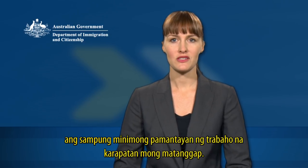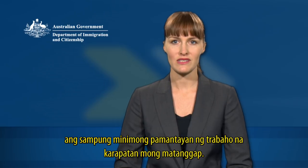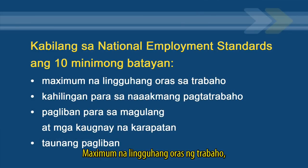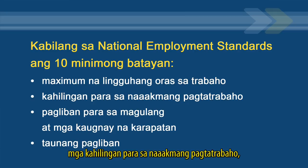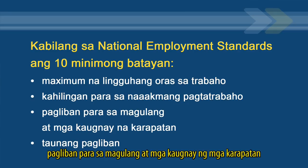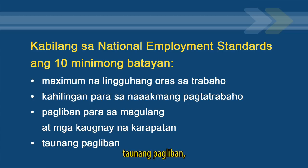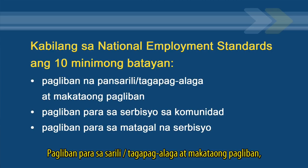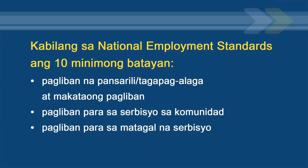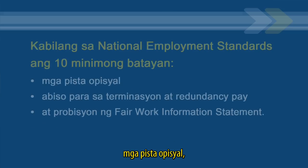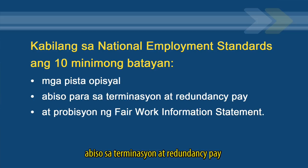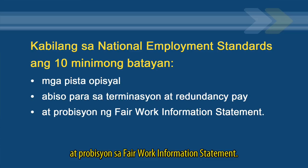The National Employment Standards include 10 minimum measures of employment you are entitled to receive. These standards are: maximum weekly hours of work, requests for flexible working arrangements, parental leave and related entitlements, annual leave, personal carers and compassionate leave, community service leave, long service leave, public holidays, notice of termination and redundancy pay, and provision of a Fair Work Information Statement.